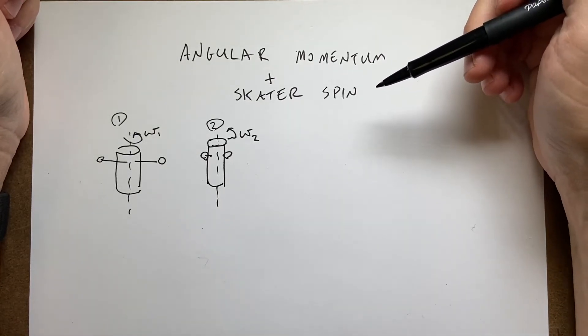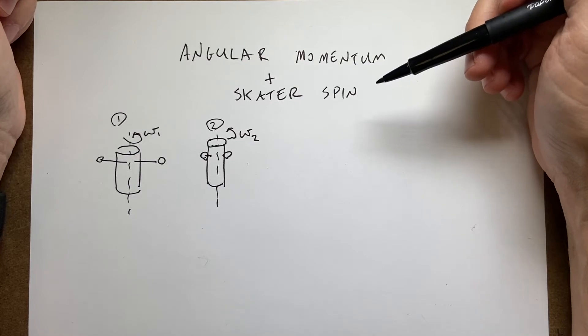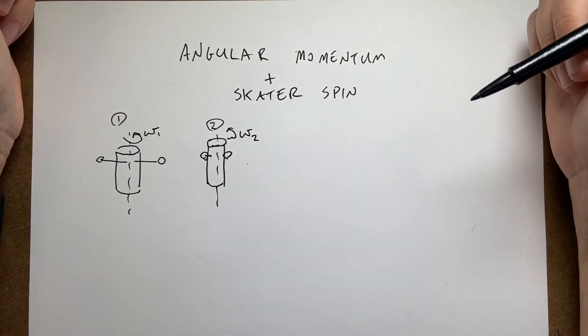Okay, I'm calling this the skater spin problem and I've kind of drawn it here but let me explain to you what's going on.